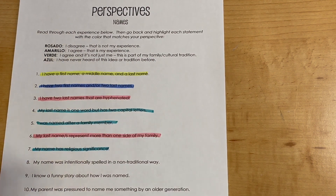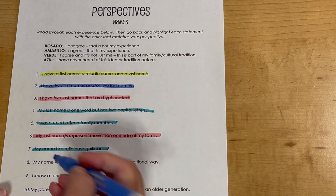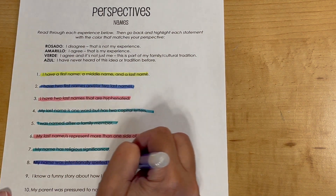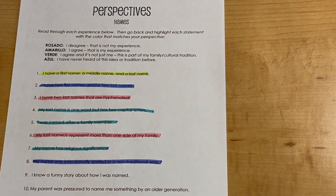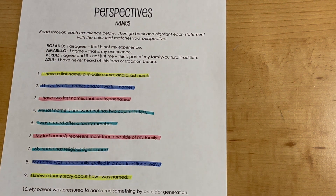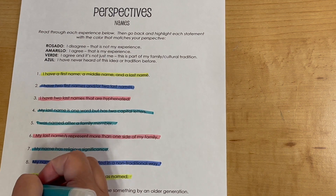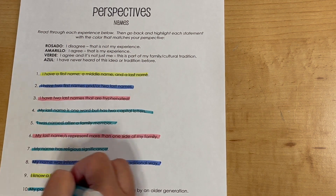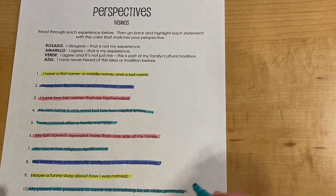The example shown here is about names. You have statements like: I have a first name, a middle name, and a last name. Or I have two first names and two last names. Or I have a hyphenated last name. Or my last name is one word but it has two capital letters in it. I was named after a family member. My name has religious significance. Things like that.